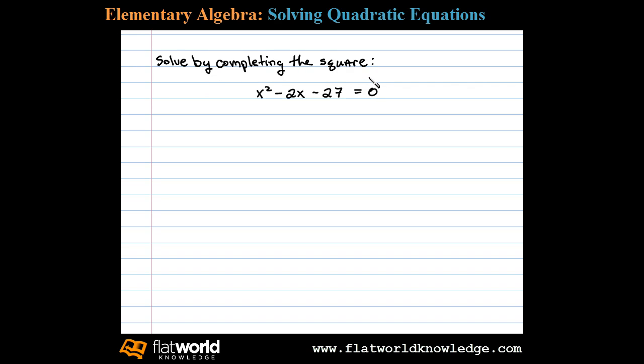Solve by completing the square. We begin by adding 27 to both sides that will leave us with x squared minus 2x equals 27.